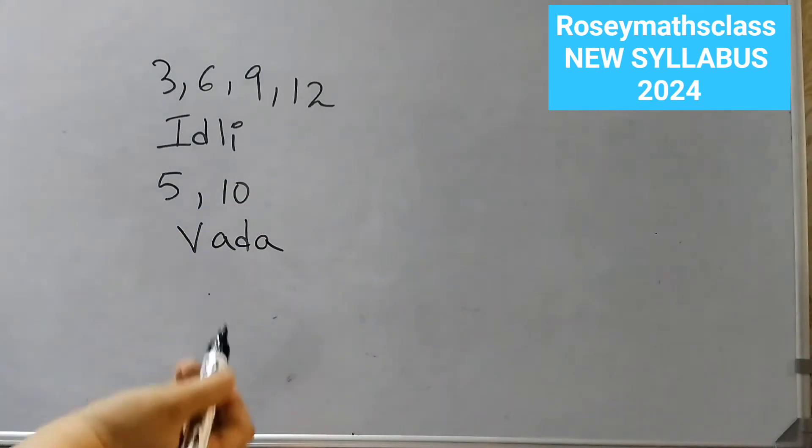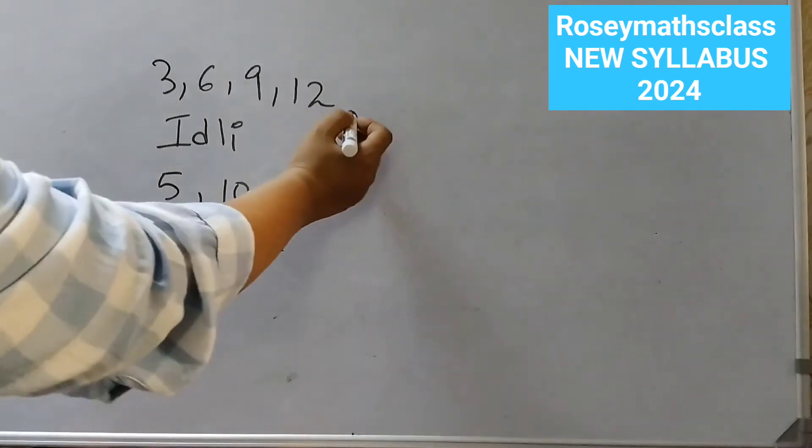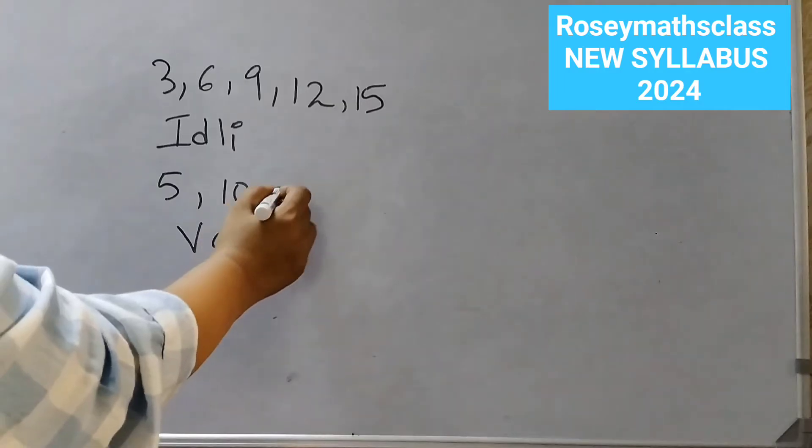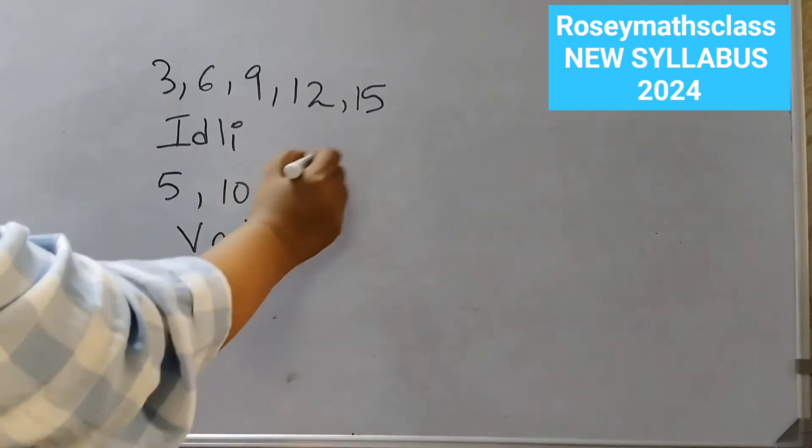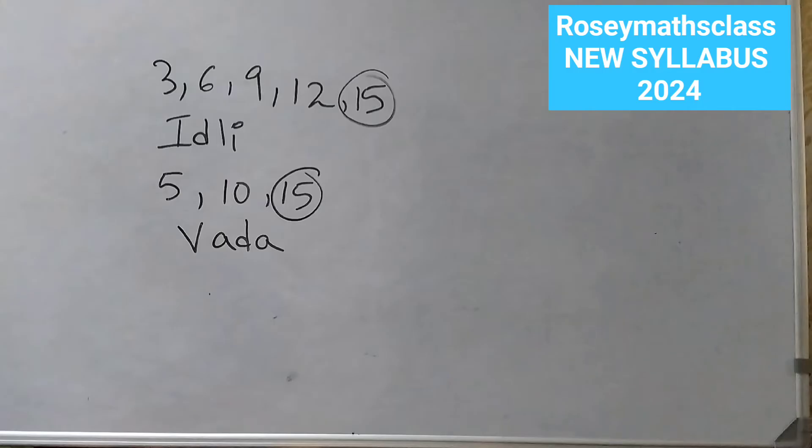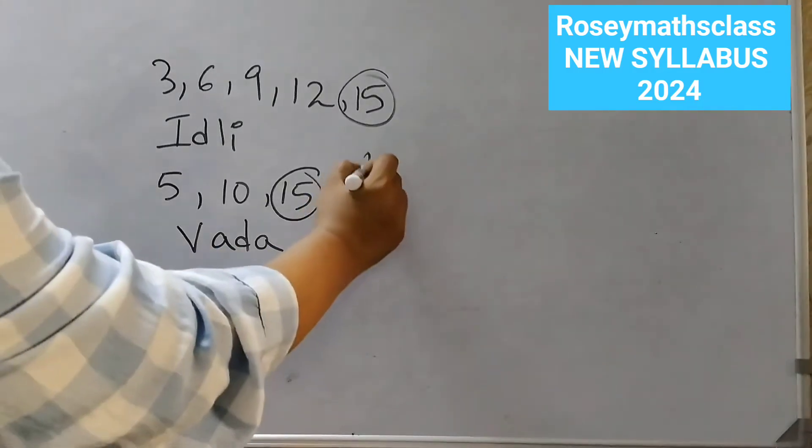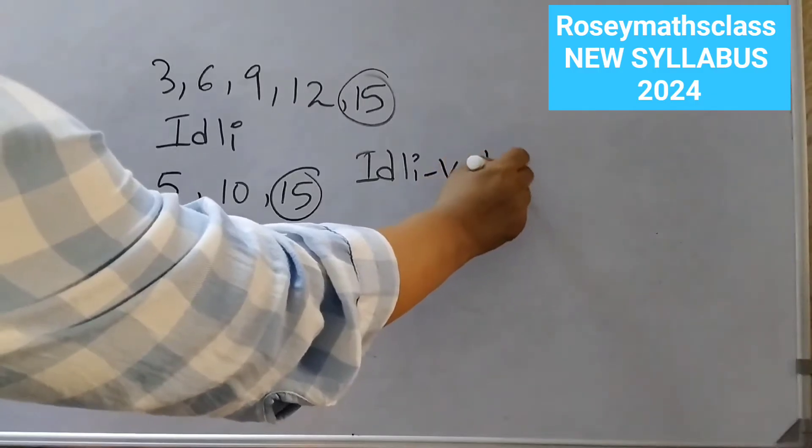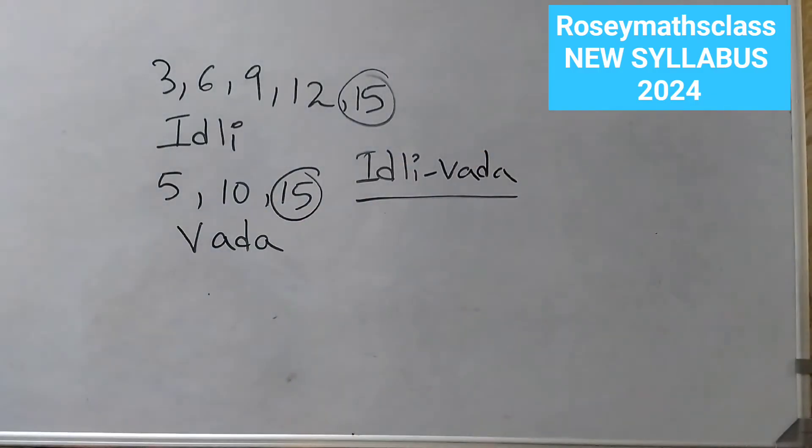And if it's a common multiple of 3 and 5, like after 12 we have 15 in the table of 3, and after 10 we have 15 in the table of 5, so whenever there's a common multiple, they would say Idli Vada together. Based on the same game, we have question number 2 and question number 3 that we are going to solve now.